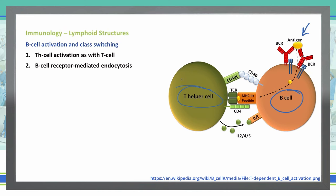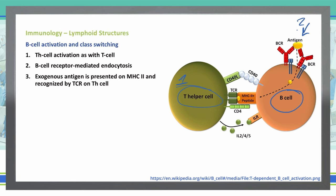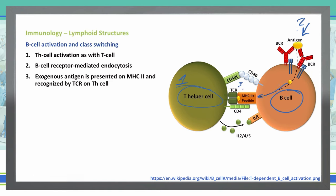Step one, step two, and then step three — we have an exogenous antigen being presented on an MHC2 and recognized by the TCR of the T helper cell. So we're taking that antigen and presenting it on the MHC2 peptide to our TCR on the T helper cell.